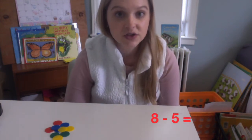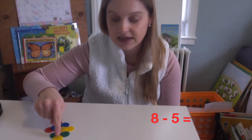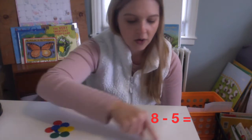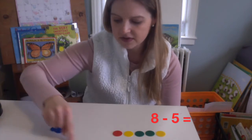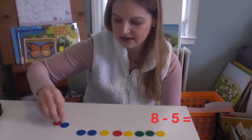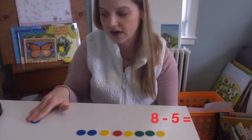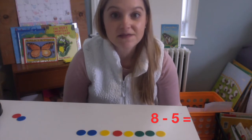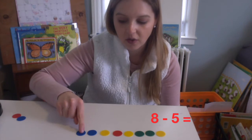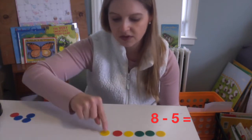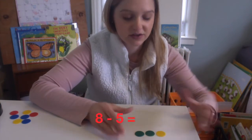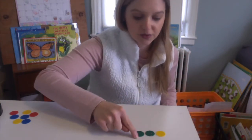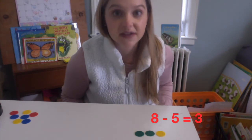We're going to start by solving the subtraction problem 8 minus 5. To do that, the first thing I want to do is count out 8 of my objects and line them up: 1, 2, 3, 4, 5, 6, 7, 8. So I have 8 in front of me. To do 8 minus 5, I want to take 5 away: 1, 2, 3, 4, 5. Now I'm only going to count what I have left — 1, 2, 3. So 8 minus 5 equals 3.